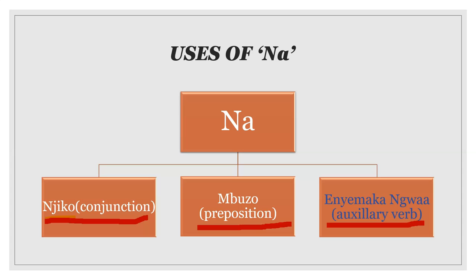In subsequent lessons, we're going to talk about the other two uses. But for today, we're going to talk about 'na' as Enyemaka Mbuwa, which is an auxiliary verb. So keep a date with Evo Tutorials for the other uses. Let's continue.